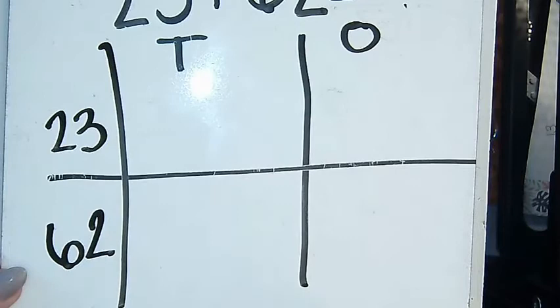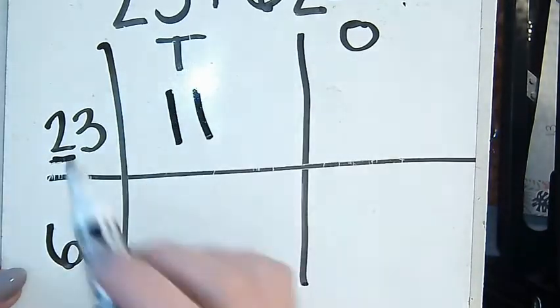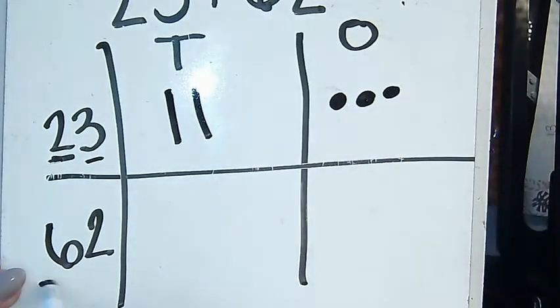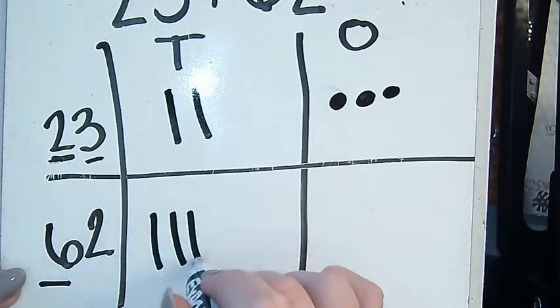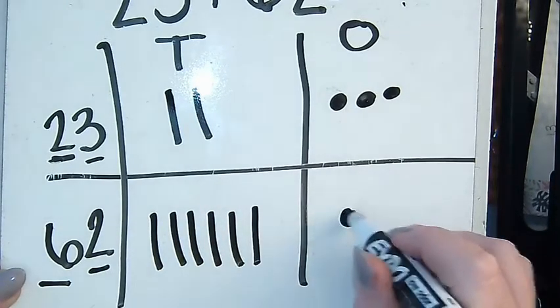We're going to do the same thing. We have two 10s. I'm going to draw two 10s and I have three 1s and I teach them to do their 1s like this. 1, 2, 3. I have six 10s. 1, 2, 3, 4, 5, 6. And I have two 1s. 1, 2.